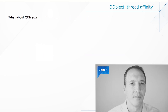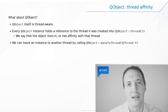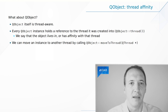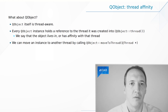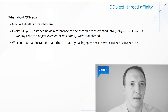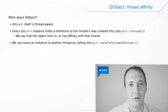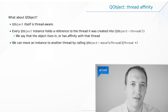What about QObject in all of this? QObject is thread-aware, which means it knows a particular thread and it lives in that thread. By default, this is the thread that creates the object. We say that the object lives in a thread or has affinity with a thread when this thread is the one that handles events for that object. If we want, we can change that and move the object to a different thread, meaning from now on that other thread will handle the events for the object.